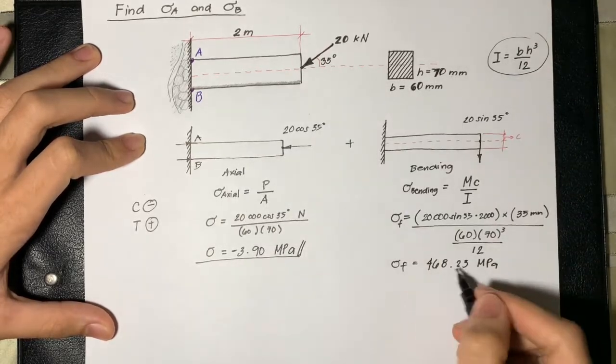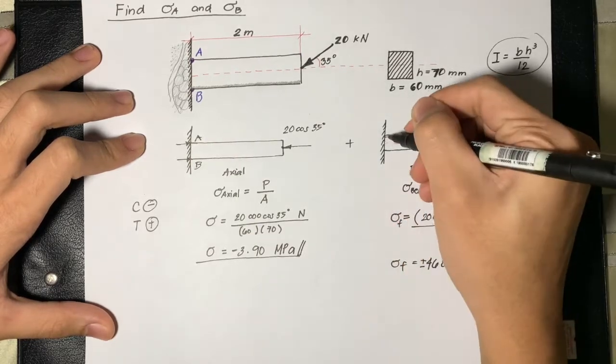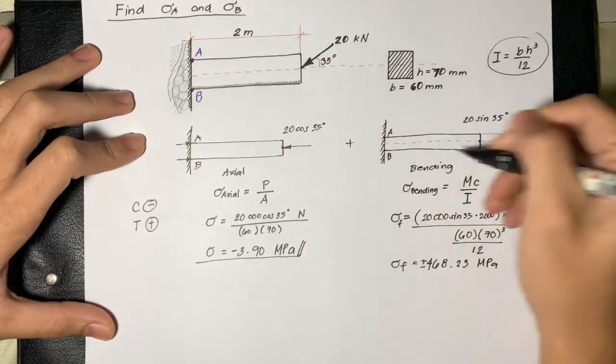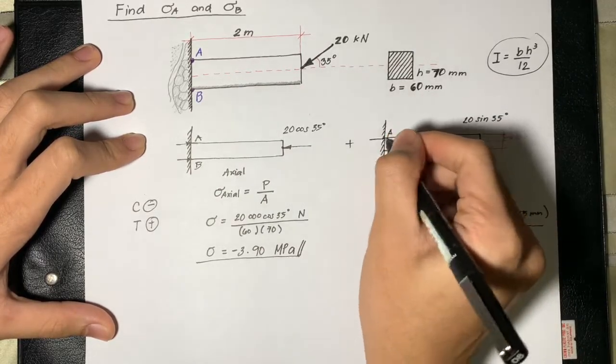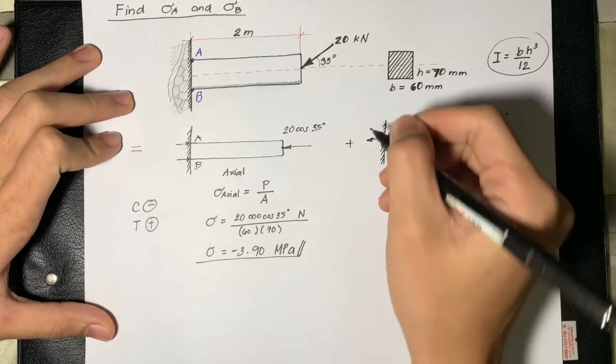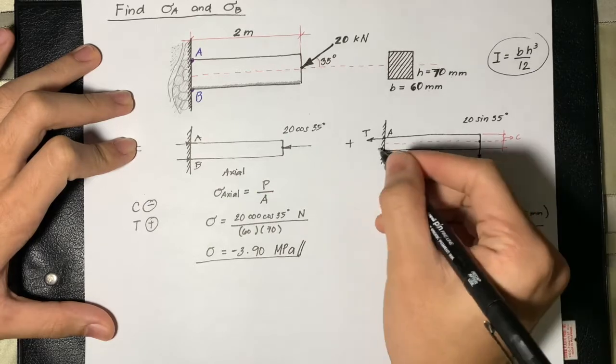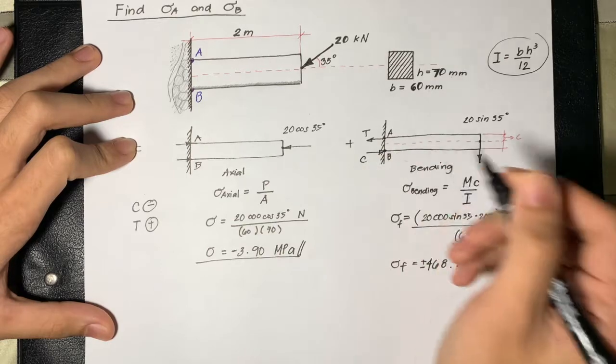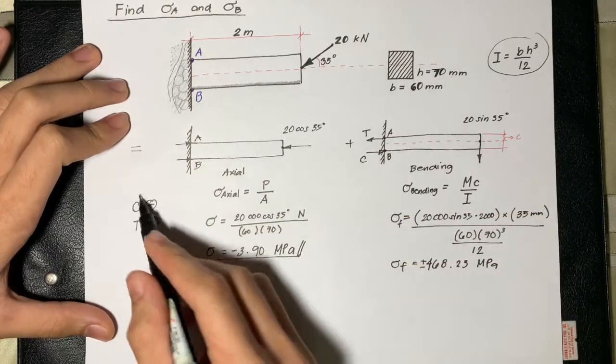This bending stress can either be positive or negative. Now we will draw the stresses at the two points. As we can observe, at point A it experiences a tensile stress while at point B it experiences compressive stress due to the vertical components of the force.